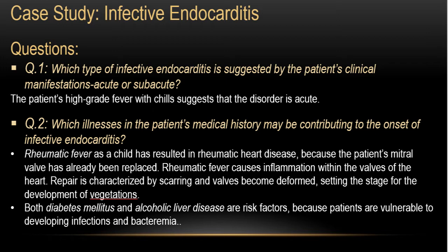Which illnesses in the patient's medical history may be contributing to the onset of infective endocarditis? The most important is the rheumatic fever as a child — this patient does not have a normal valve and had his mitral valve replaced. Additionally, both diabetes mellitus and alcoholic liver disease are risk factors, as these patients are more vulnerable to developing infections and bacteremia.